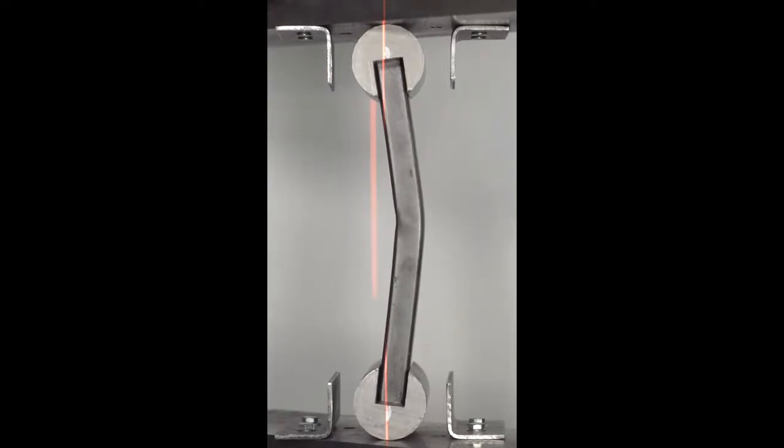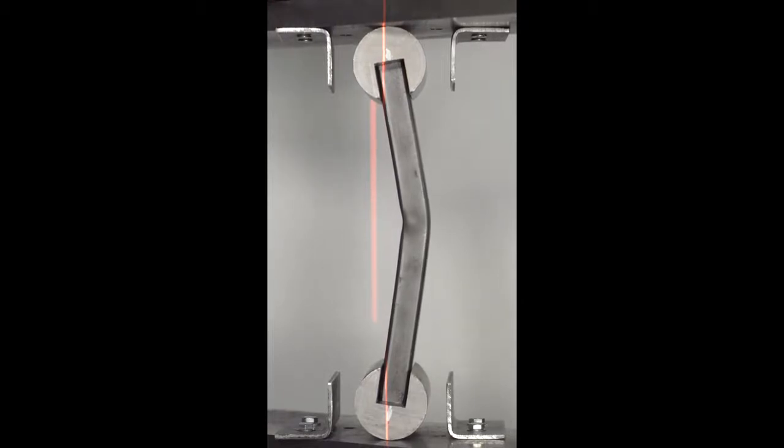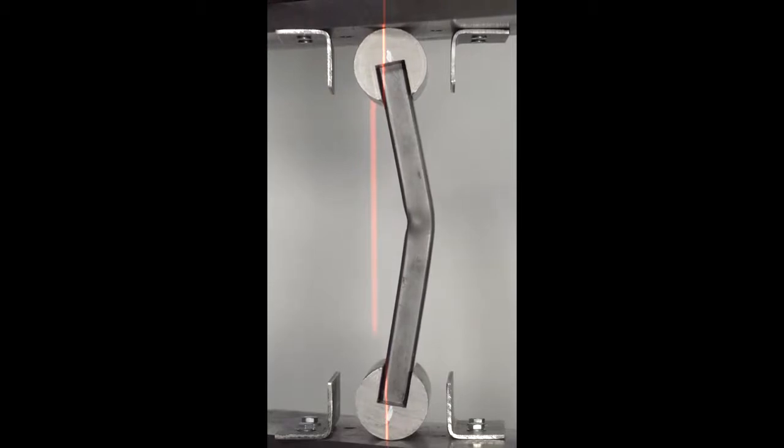Once this occurs, the column begins to lose its load carrying capacity. This particular phenomenon is not in the elastic but in the plastic range. Therefore, the failure is governed by the material rather than the geometry of the specimen.